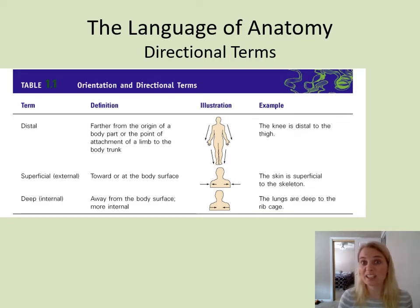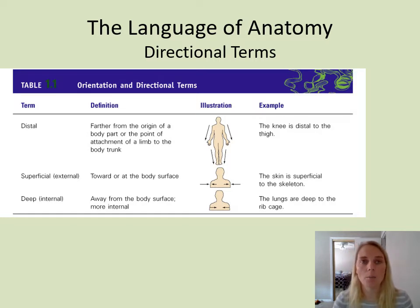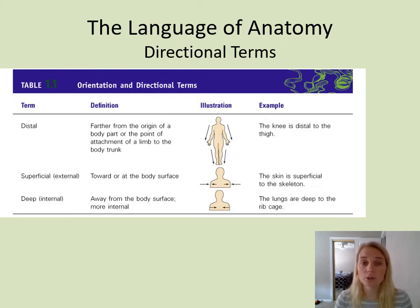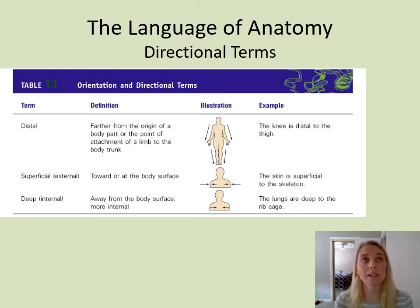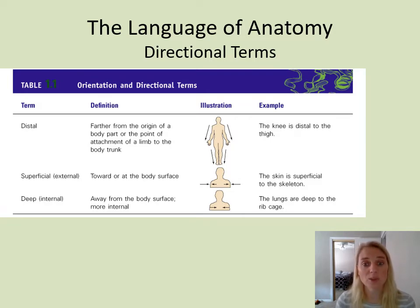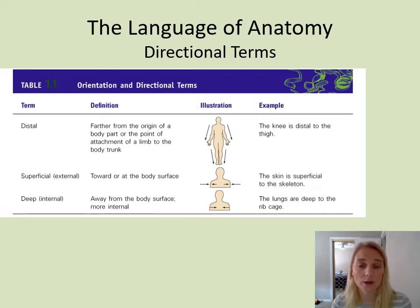Superficial means towards the surface — your skin is superficial, your muscles are deep. Or you can say your bones are deep to your muscles. Close to the surface is superficial; deeper is deep or internal. So those are our directional terms. When you're looking at diagrams or reading about a body part and these terms are used, that's why it's important to get these down now so you can understand the reading better.